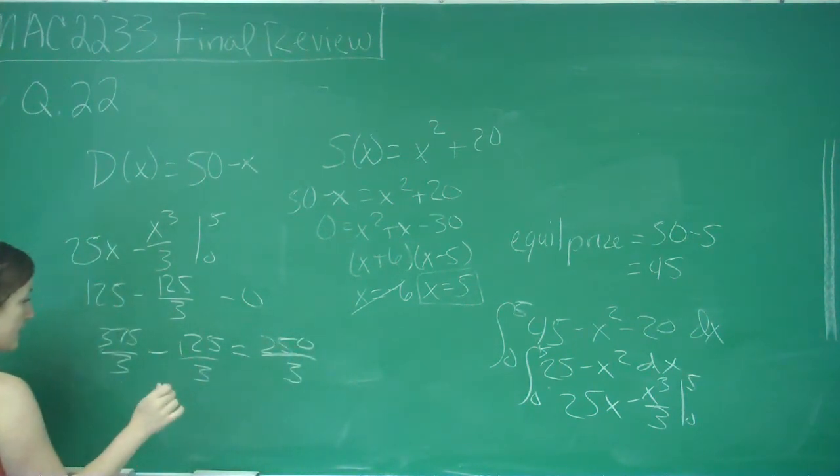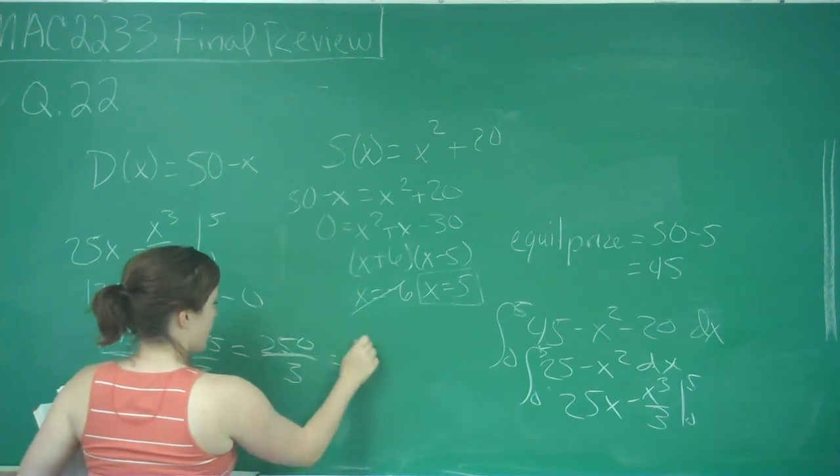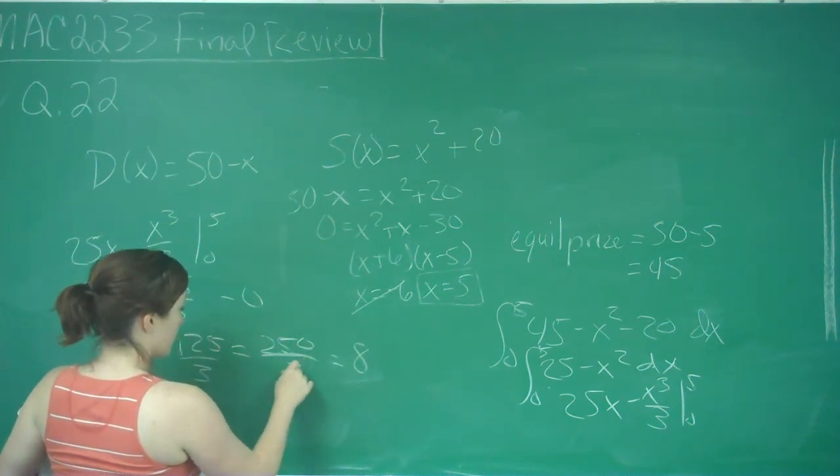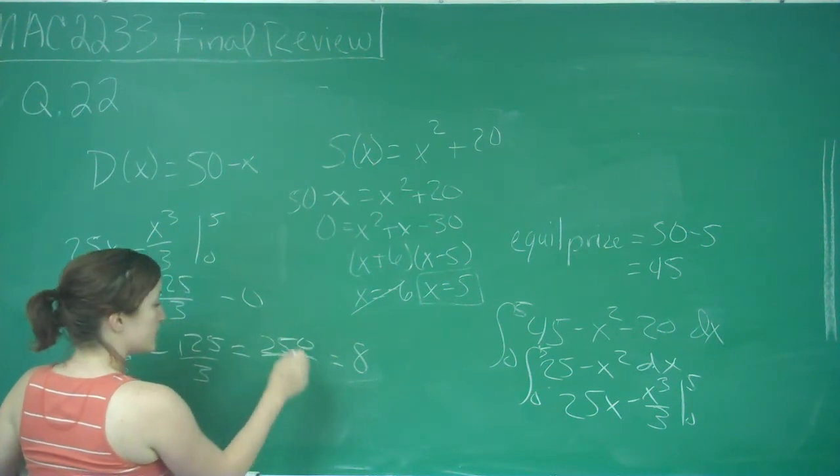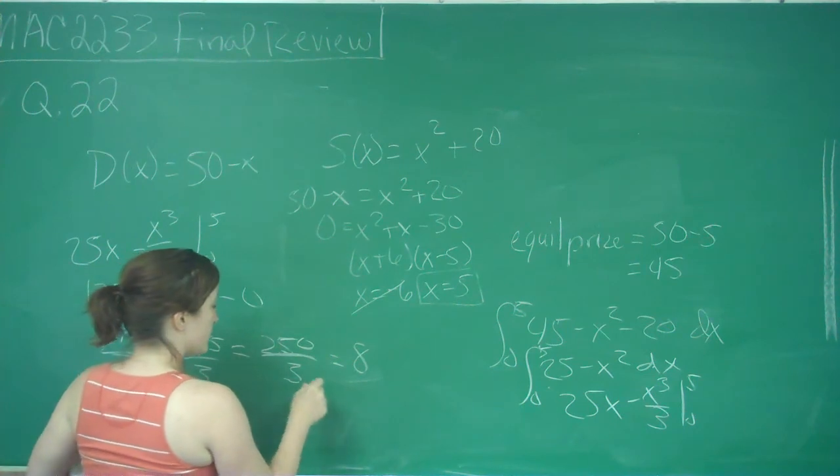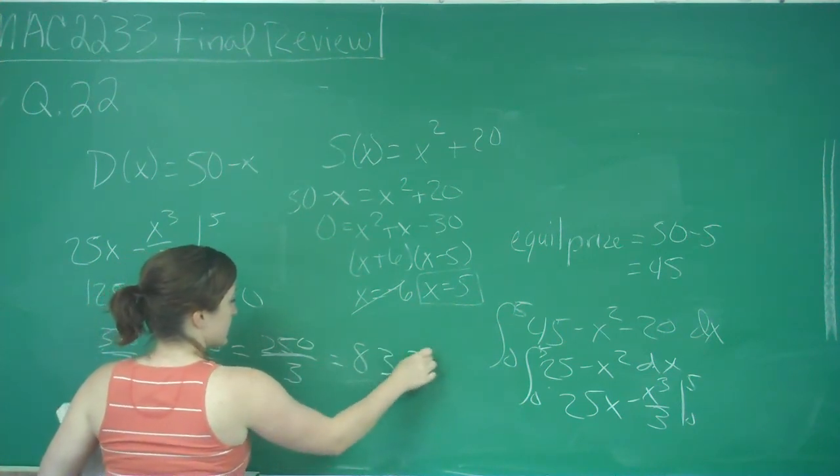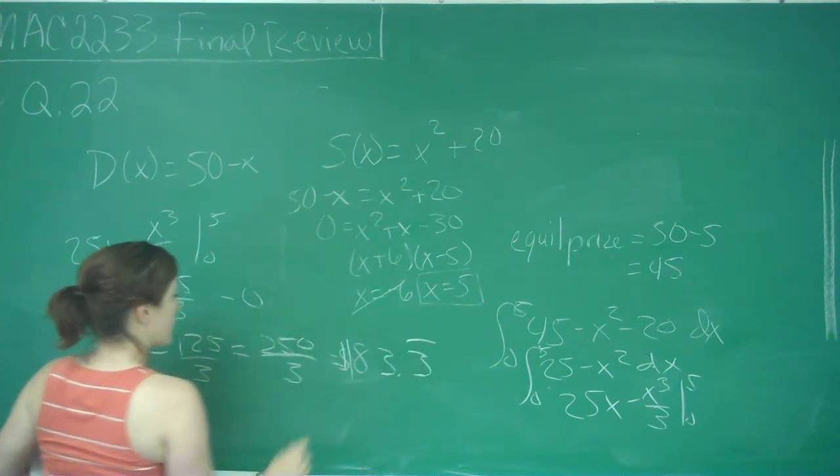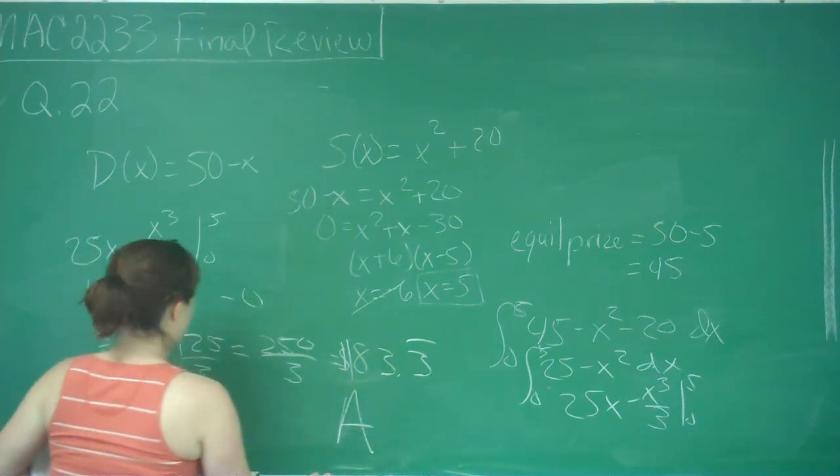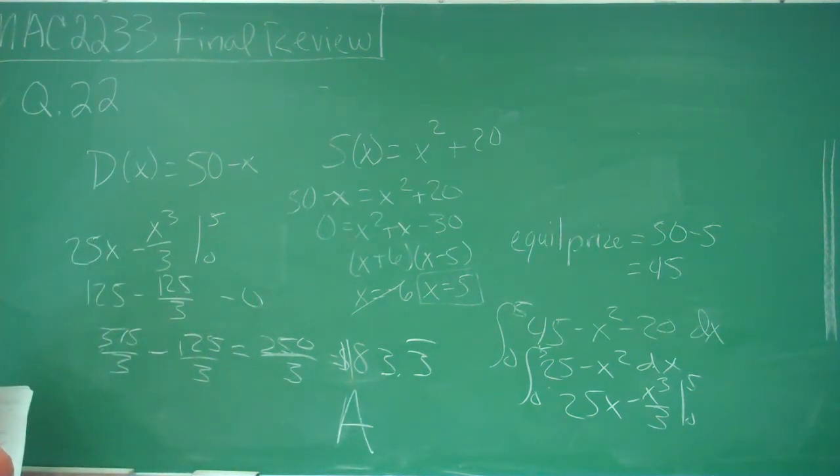And when we divide that, 3 goes into 25 eight times and then we subtract to get 1, bring down 0 which is 10, 3 goes into 10 three times and we'll continue. So our answer then is A. Our producer's surplus at the equilibrium price is $83.33.